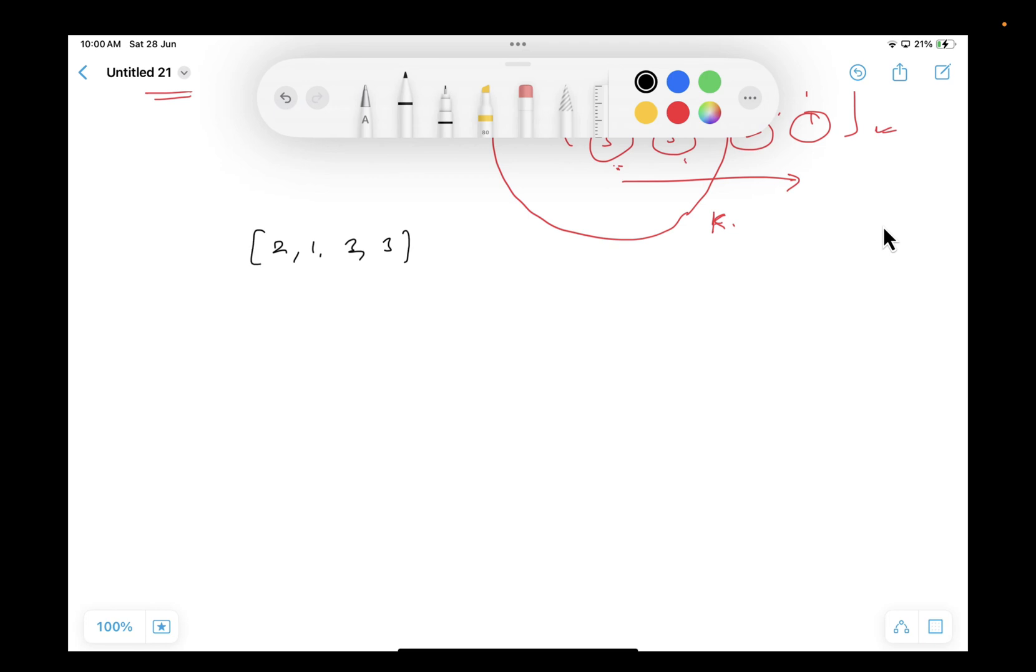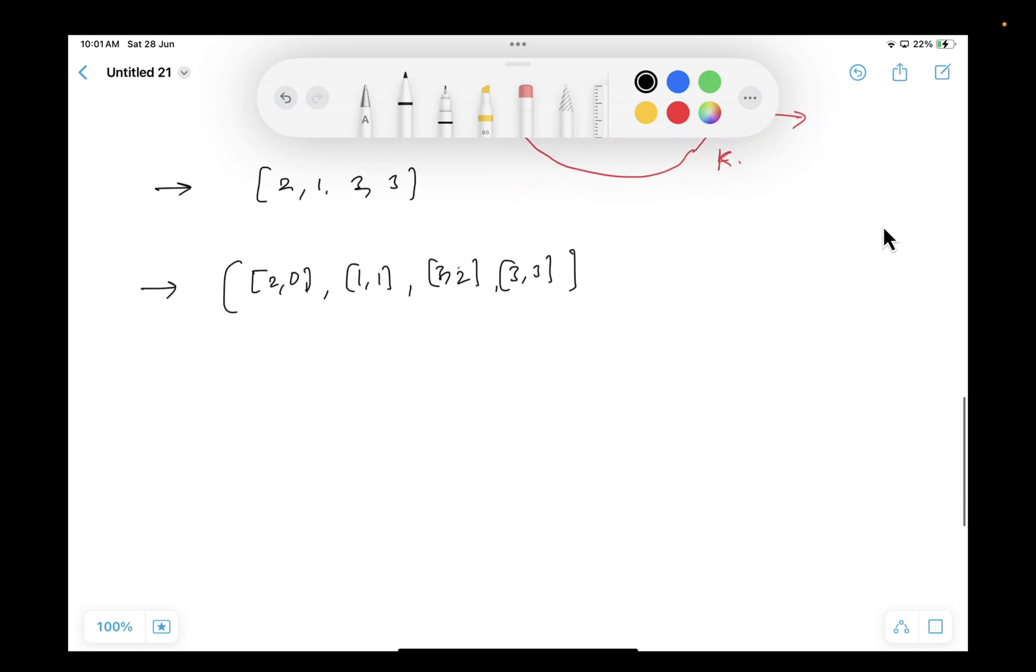This is a 1D array, and this 1D array just converted to 2D array. Not like this, I will just make it like this: 2 with index 0, 1 has index 1, 3 has index 2, and this 3 is having index 3. So this is the array given to us, and this is something I have converted it into. And now what I have to do is